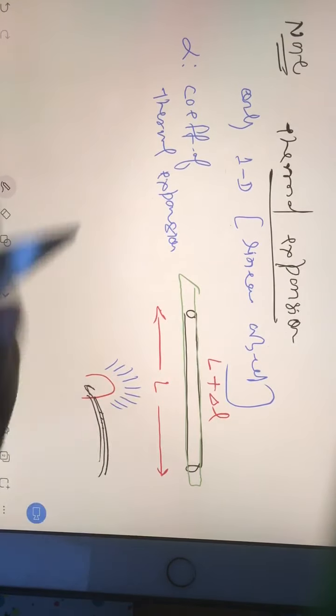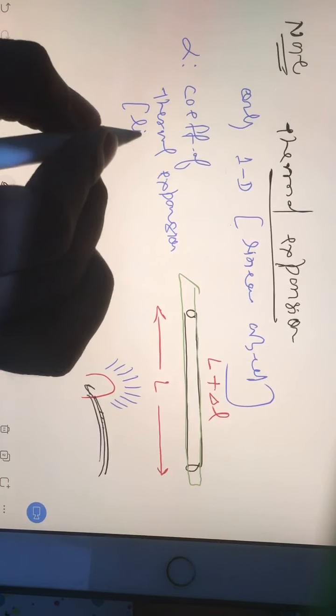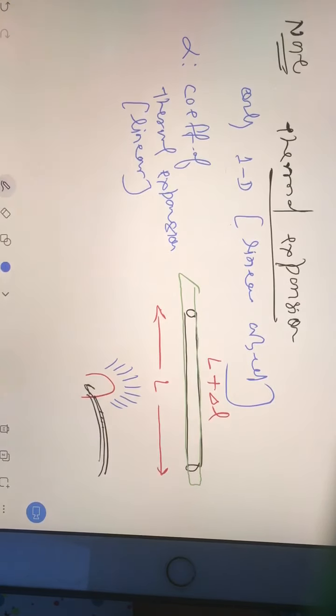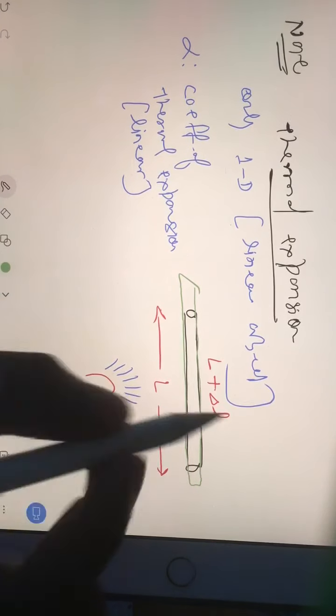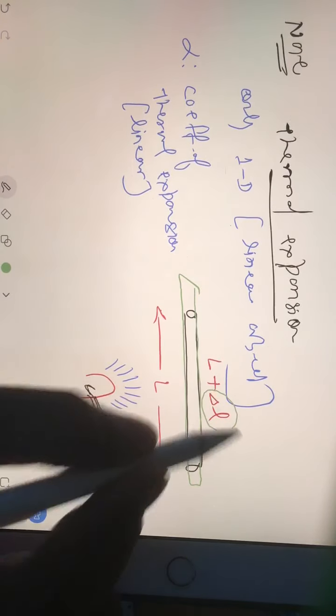of coefficients of thermal expansion: alpha, beta, gamma. But we are talking about linear, so linear coefficient of thermal expansion. Now you see, to find out this change in length, we have a separate formula. That length L, you can find out - actually, it used to be proportional to